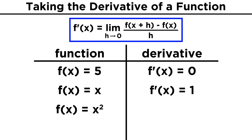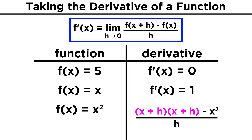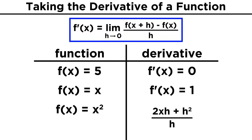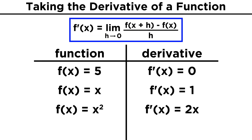Now let's try x squared. Remember that we are plugging x plus h into the function first, so we have x plus h quantity squared, minus the function itself, or x squared. Now we have to FOIL this first term on the top, and we get x squared plus two xh plus h squared, minus the x squared, and that leaves us with two xh plus h squared. Dividing both terms on top by the h on the bottom, we get two x plus h, and when h goes to zero, that leaves us with two x. So the derivative of x squared is two x.